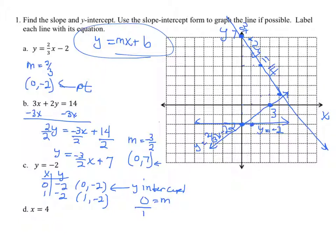We have to do the little table thing where x is 4 all the time and y can be anything it wants to be. So 4, 0, 4, 1. And we just graph that line. x equals 4.